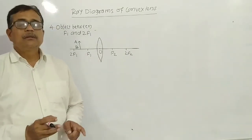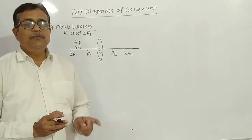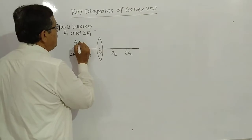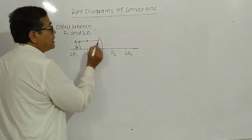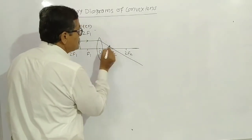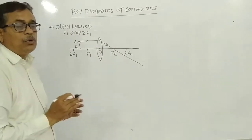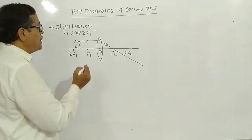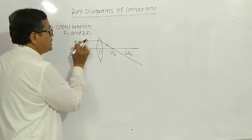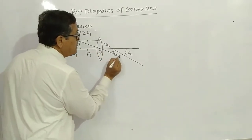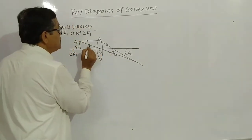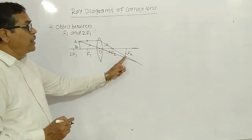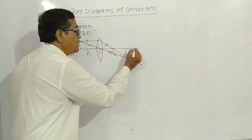Rule number one: a light ray parallel to the principal axis — the refracted ray passes from the focus. We apply rule number one here. Then rule number three: a light ray passing from optical center O passes undeviated. Both the refracted rays meet behind 2F2, and there is the image of the object.